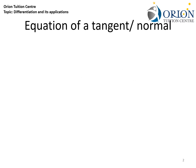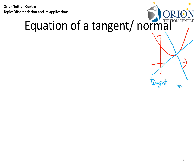For any given curve, we can always specify two lines. The first line is a line that just touches a point on the curve, and we call this the tangent. We can also have a line that is perpendicular to the same point, and this is called the normal. We are interested to find out the equations of a tangent and a normal to a certain point on the curve, and we can make use of the following equation.